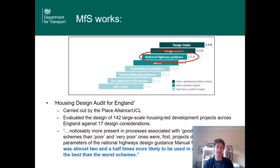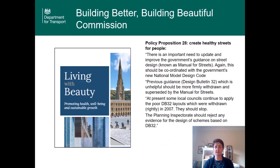We know that Manual for Streets and the principles within it work. This is an extract from the Housing Design Audit for England, carried out by the Place Alliance and University College London, which audited and evaluated the design of 142 large-scale housing developments across the country and scored them on various design considerations. What it found was that high-scoring, good developments were much more likely to have been designed using Manual for Streets principles — almost two and a half times more likely.